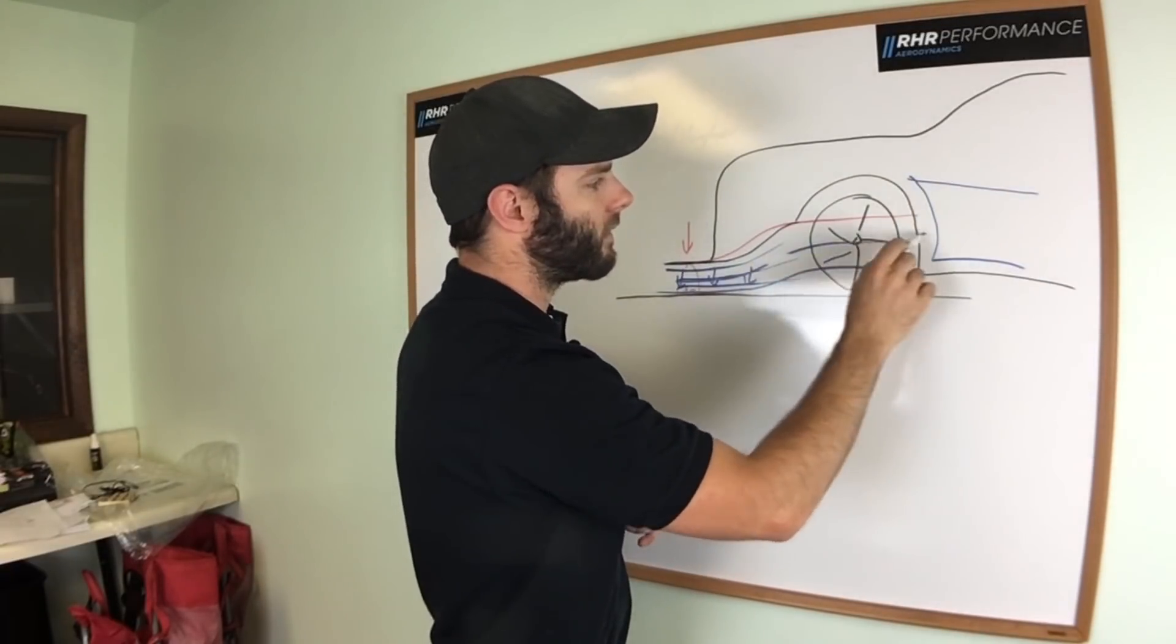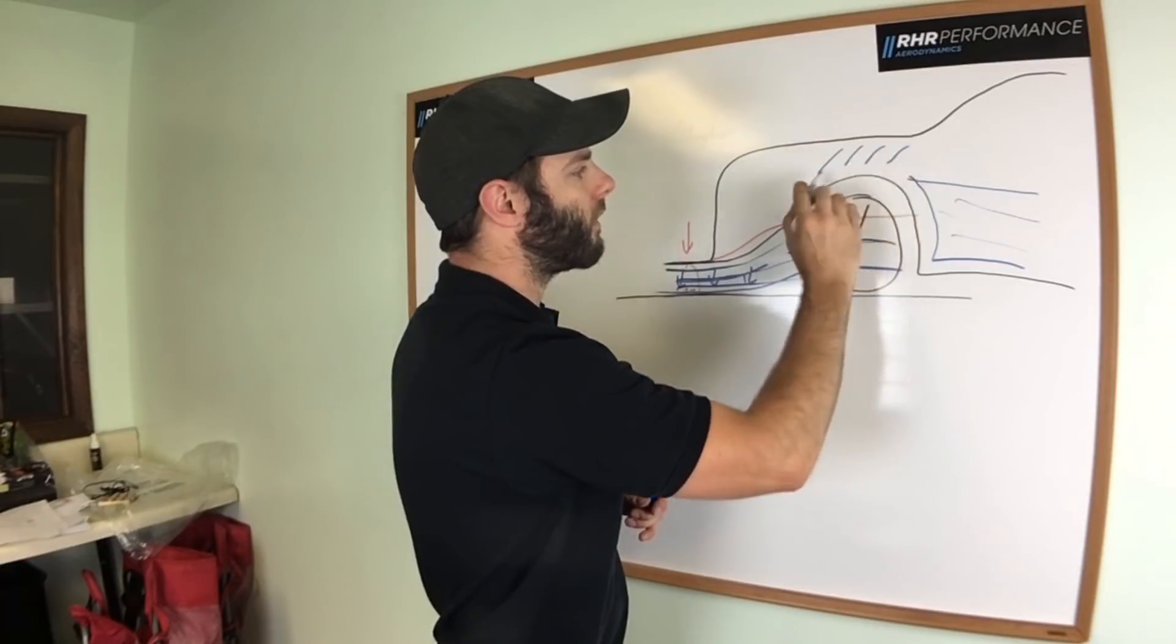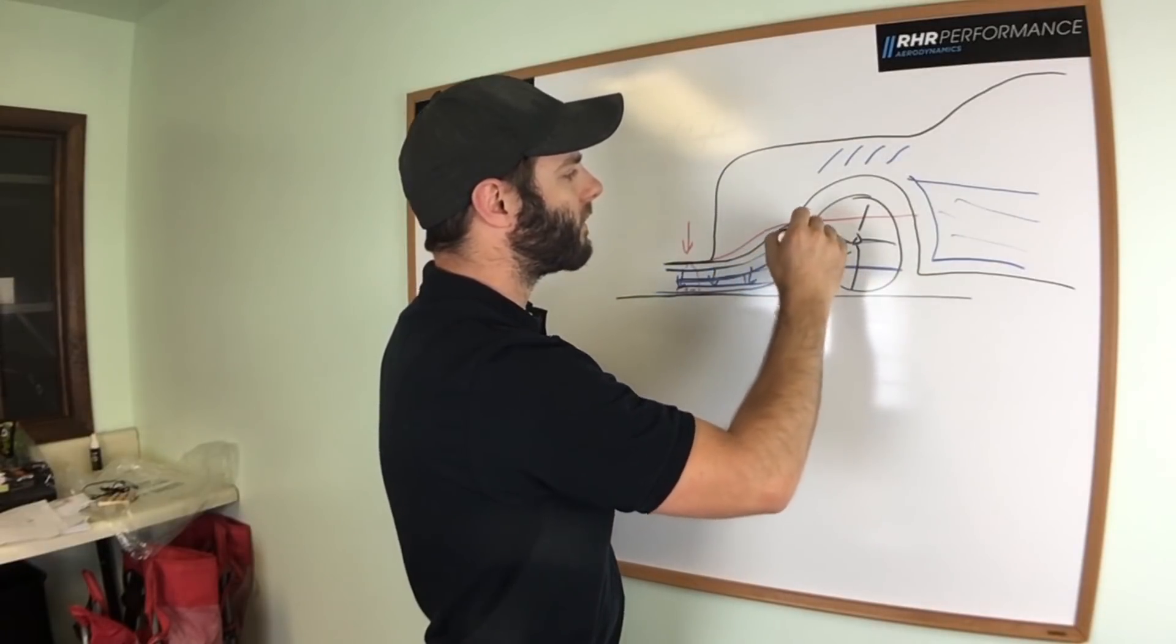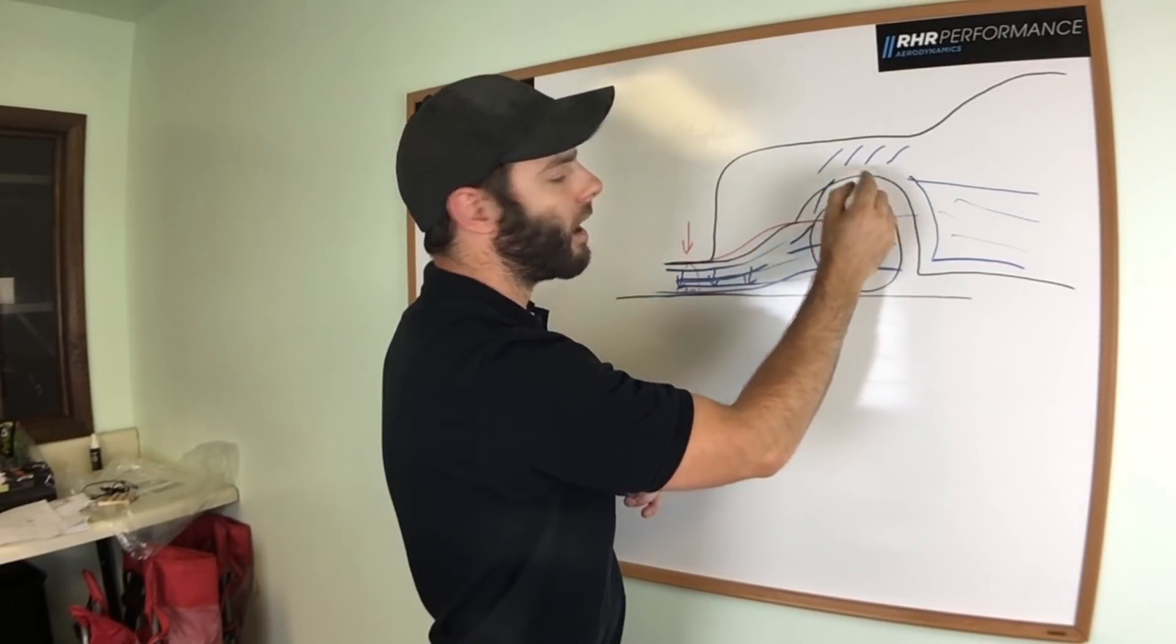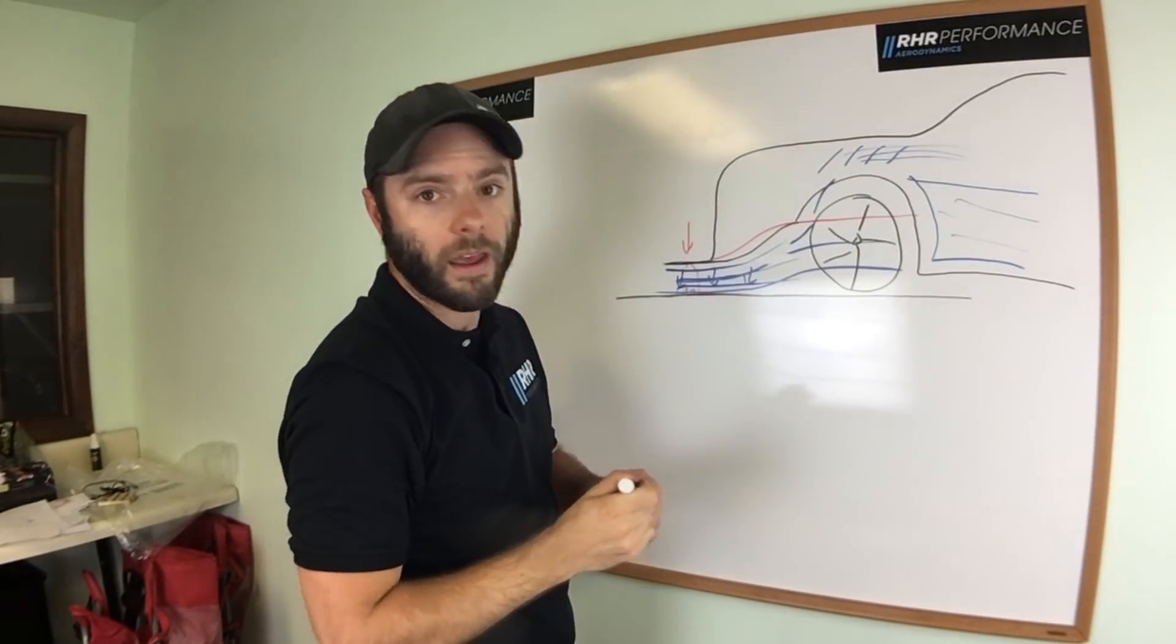That's why a lot of times you'll see race cars with some sort of tire relief to let this air back out. You'll see some sort of louvers up here. As the air hits the tire, makes its way up and you get high pressure under the fender, the air can then come out of the fender louvers as well.